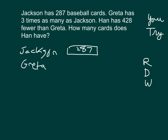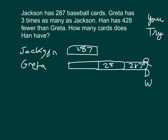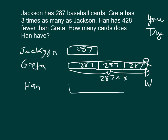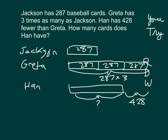Greta has three times as much as Jackson. So we have 287, 287 again, and 287 again — that is the amount for Greta. As a multiplication problem, that would be 287 times 3. Finally, we're looking at Han. It says Han has 428 fewer than Greta, so Han's amount is less. For our sentence, we would say Han has blank baseball cards.